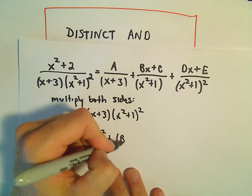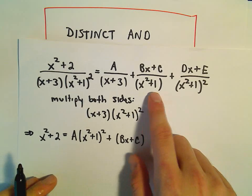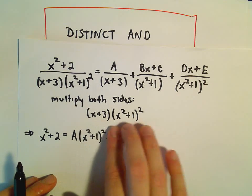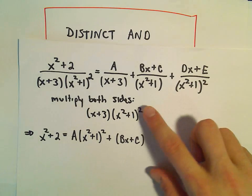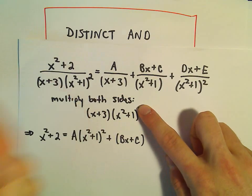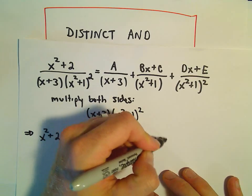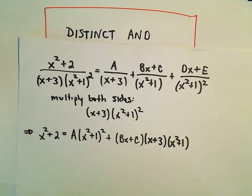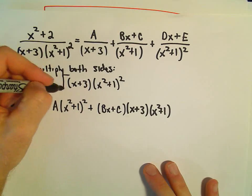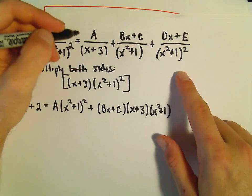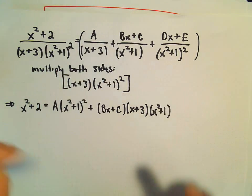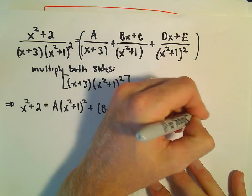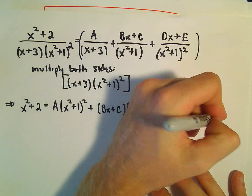Then we have Bx plus C — when we multiply by x plus 3 times x squared plus 1 squared, one of the x squared plus 1s cancels, leaving x plus 3 times x squared plus 1. For the very last term, the x squared plus 1 squareds cancel, leaving us with Dx plus E times x plus 3.